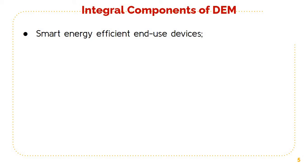Then intelligent end-use devices which allow two-way communication and control: high efficiency IP-addressable appliances that can be controlled by the utility, end user, or other authorized authorities.